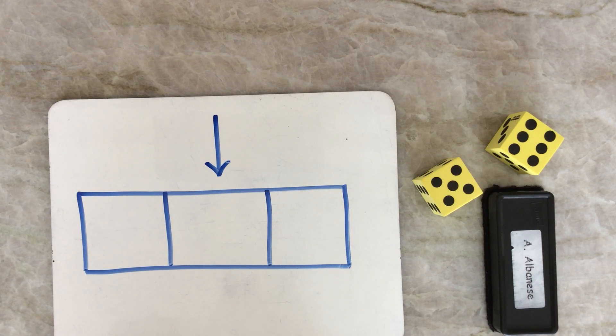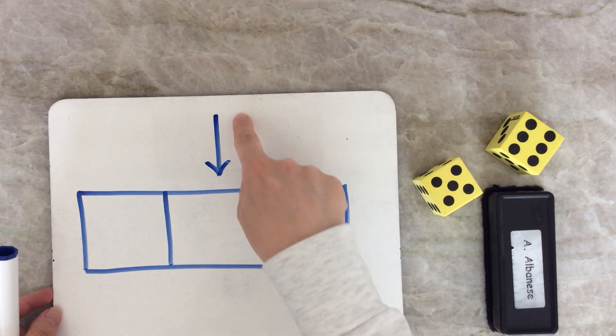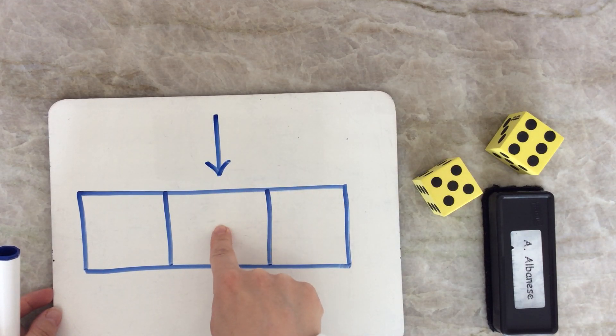To play this game, you're going to draw a big rectangle and make three boxes inside. You're going to draw an arrow down to the middle box.